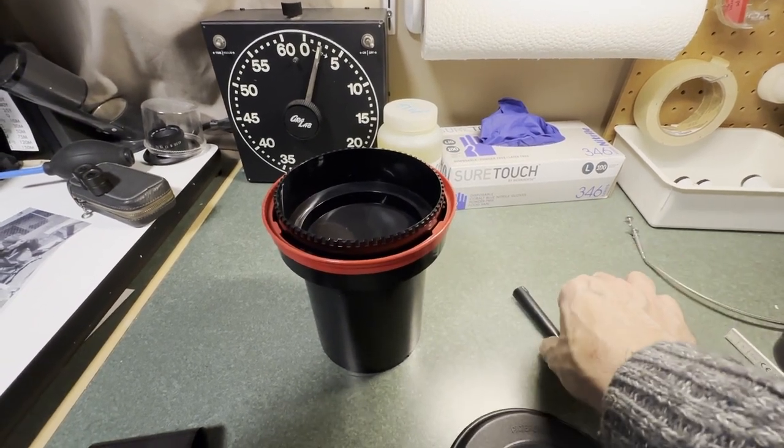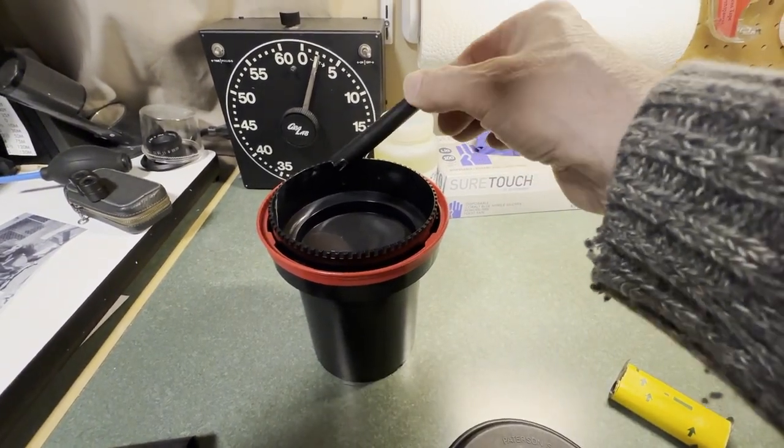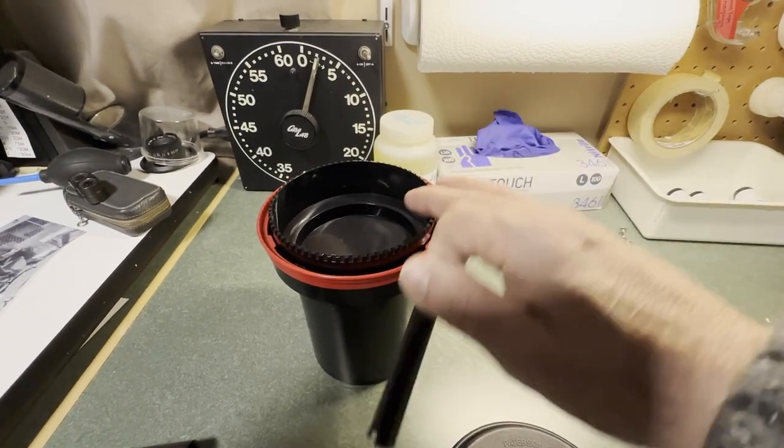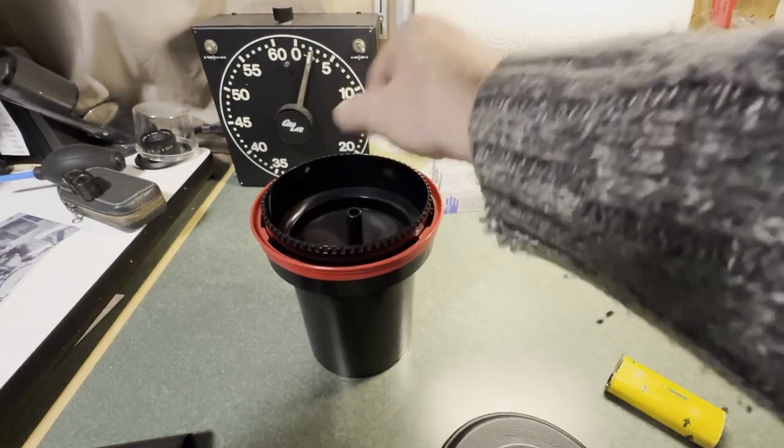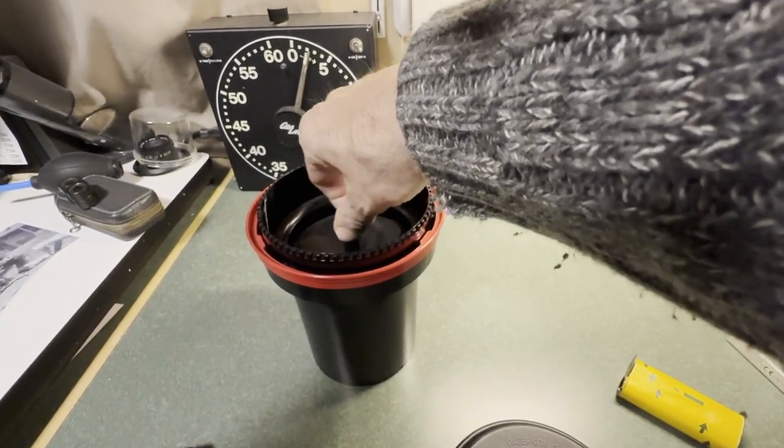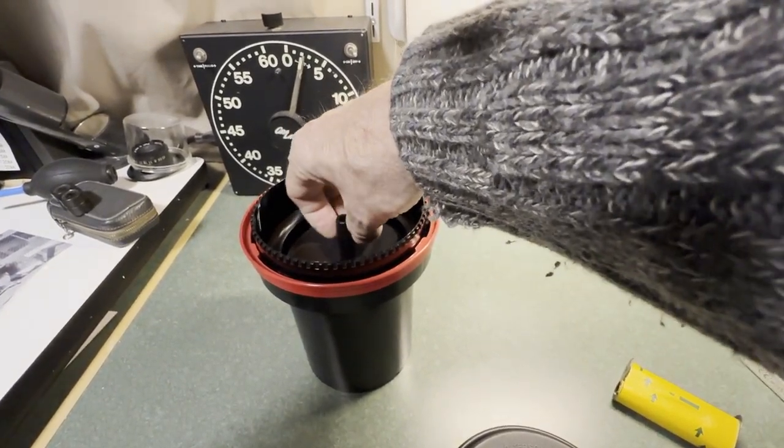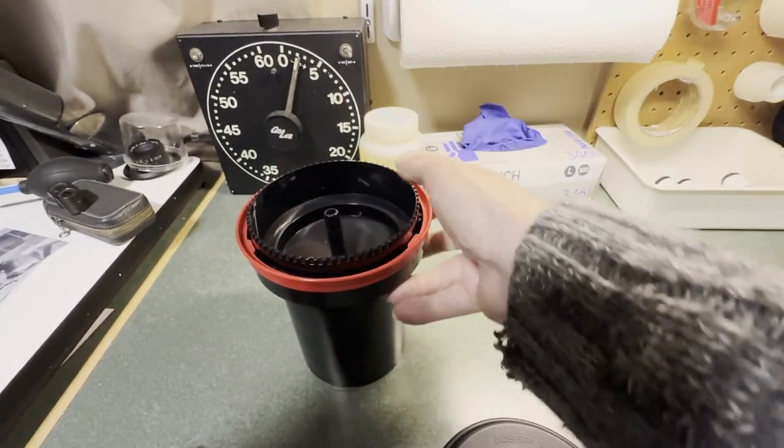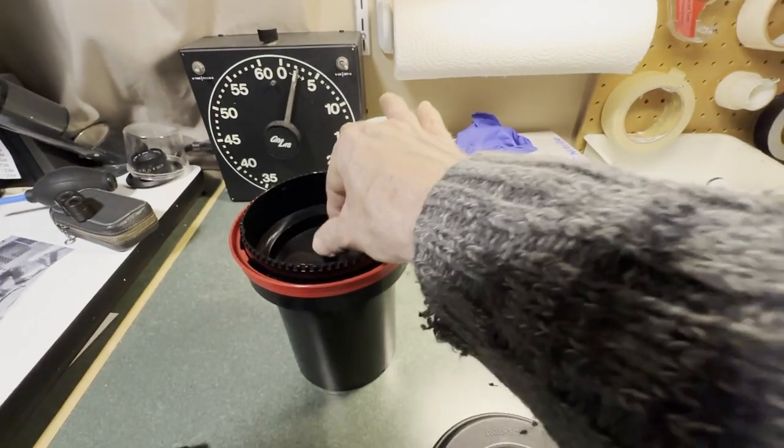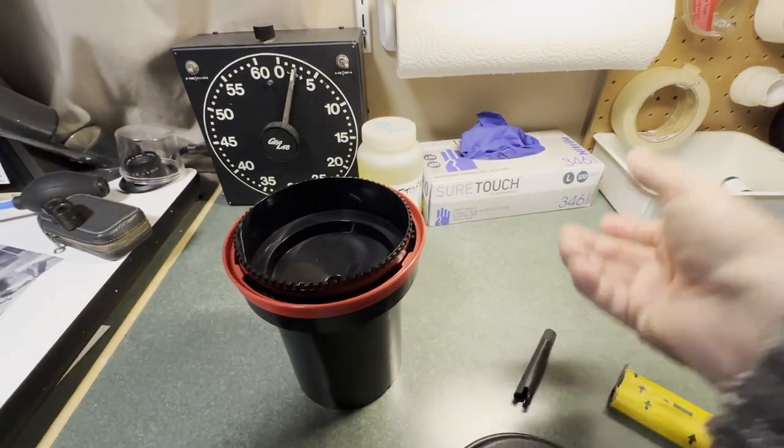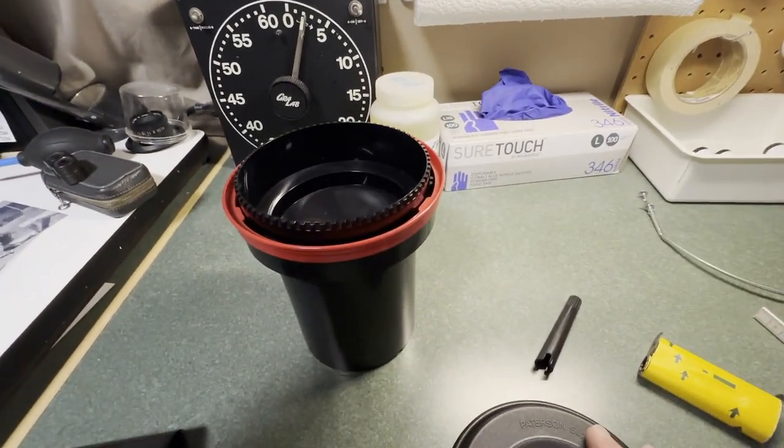So instead for agitation, I strongly recommend you use the Patterson tank the way it was designed, and that is use the swizzle stick method to agitate your film side to side. Use that type of agitation rather than completely inverting the tank.